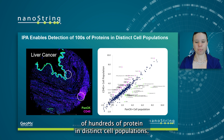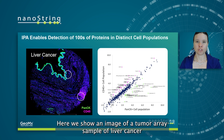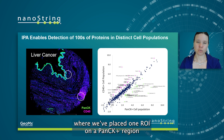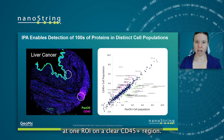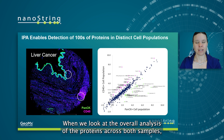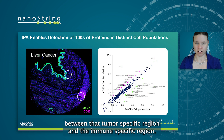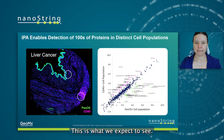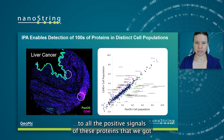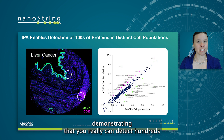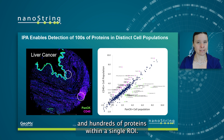IPA enables detection of hundreds of proteins in distinct cell populations. Here we show an image of a tumor array sample of liver cancer where we've placed one ROI on a clear PANCK-positive region and one ROI on a clear CD45-positive region. When we look at the overall analysis of the proteins across both samples, we can see the clear differentiation between that tumor-specific region and the immune-specific region — this is what we expect to see. I'll also draw your attention to all the positive signals of these proteins, demonstrating that you really can detect hundreds and hundreds of proteins within a single ROI.